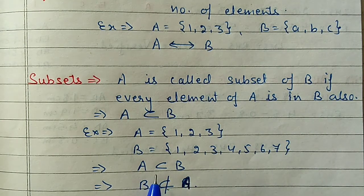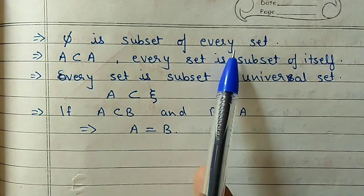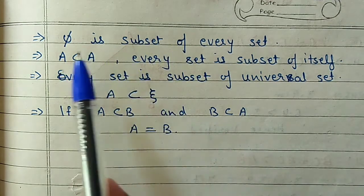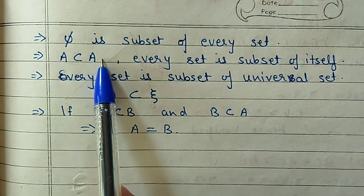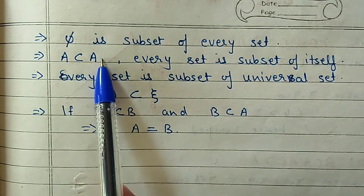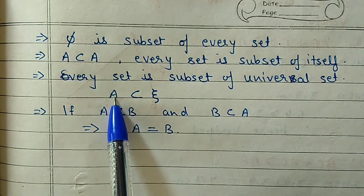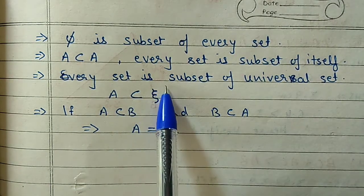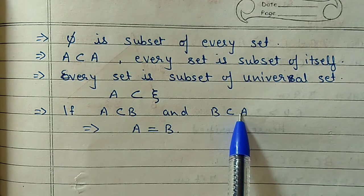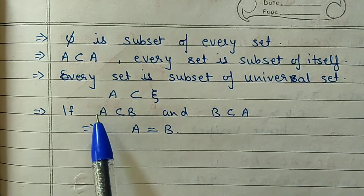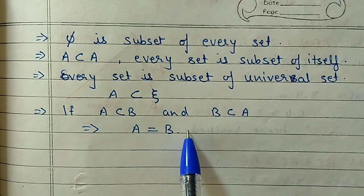Always remember: the empty set is the subset of every set, because the empty set is empty - nothing is there, so we can consider it a subset of every set. Also, every set is the subset of itself - A ⊆ A because both have the same elements. Every set is a subset of the universal set because the universal set contains all elements. And if A ⊆ B and B ⊆ A, then A and B are equal, which is only possible when A and B have exactly the same elements.